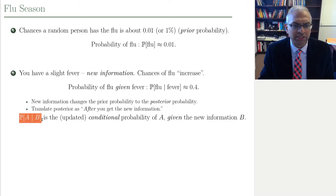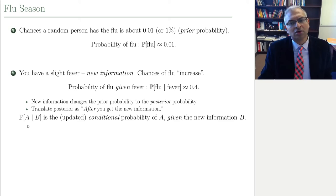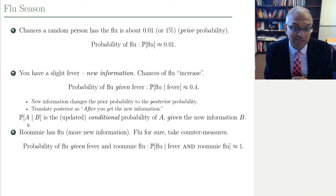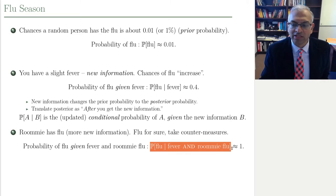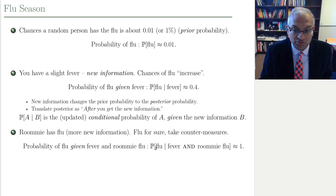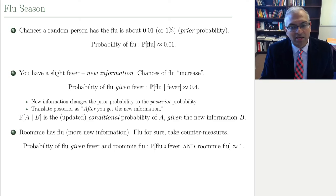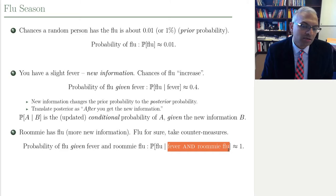In general, we can do this for any two events. We say the probability of A given B is the updated probability of event A, now that you know event B has occurred. We call this the conditional probability, written with a vertical bar. Now suppose I also find out an additional piece of new information — that your roommate has a flu. Now the probability of flu given that you have a fever AND your roommate has a flu is much, much higher than 40%, because all conditions point to the fact that you have a flu. On the right of the vertical bar is the new knowledge we're using to update that probability.